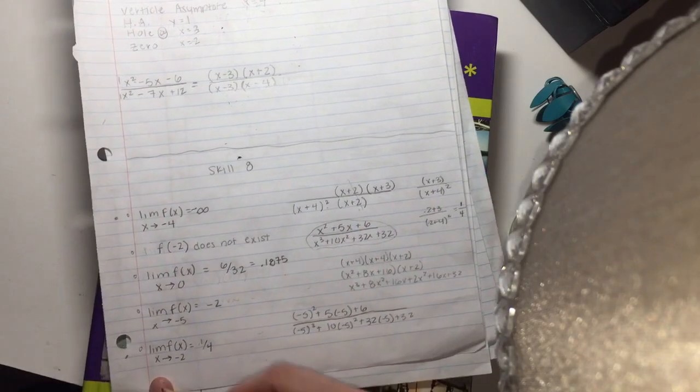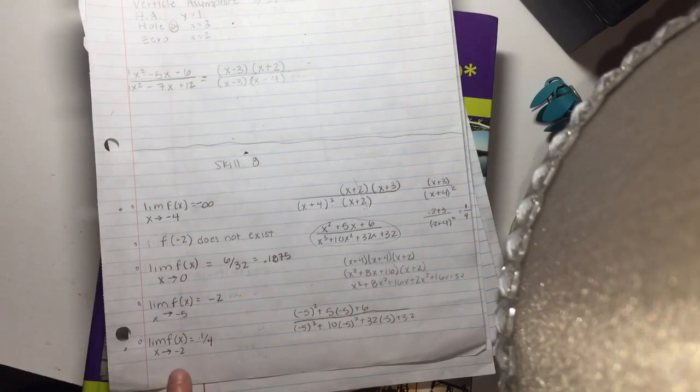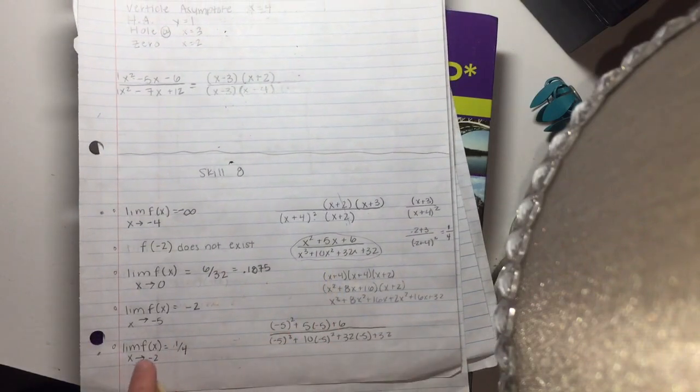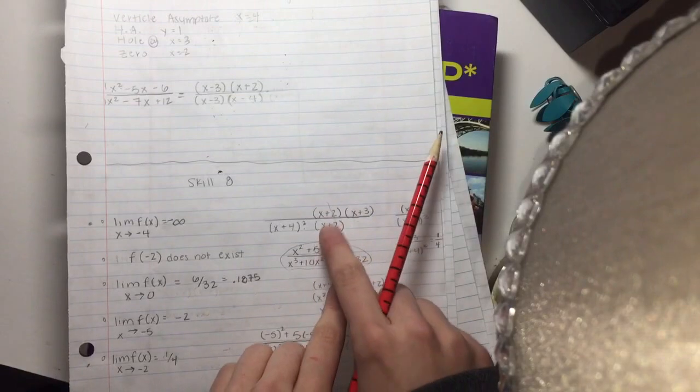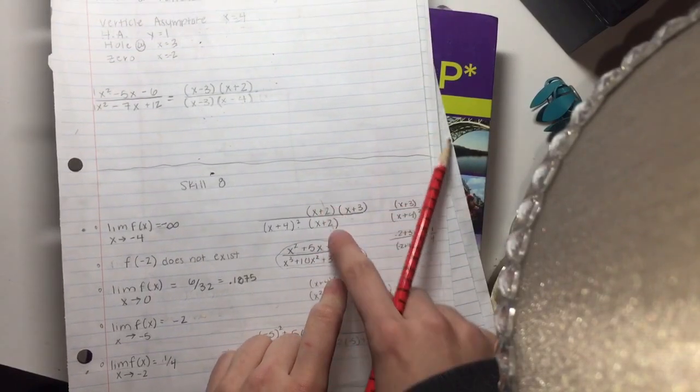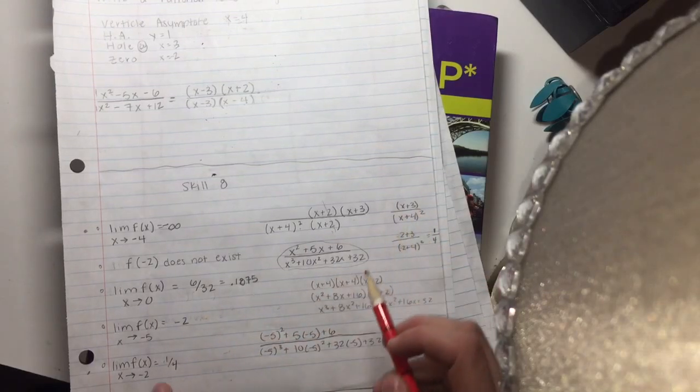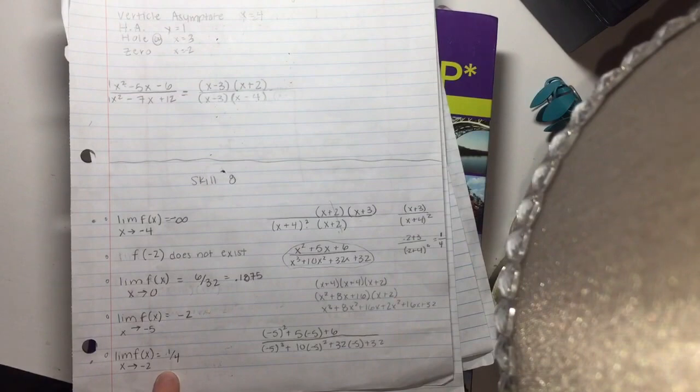So jumping down here, when the limit of f(x) of x approaching negative 2, which is the hole, what we're going to do is we're going to plug negative 2 back into this equation, but we're going to ignore this, we're going to not include the x plus 2 that we crossed out. So it's pretty much x plus 3 over x plus 4 squared, and that's when you get 1 fourth. So that's the answer for that one.